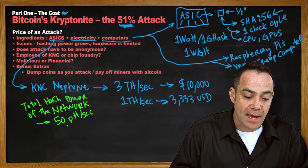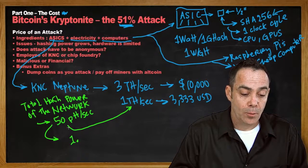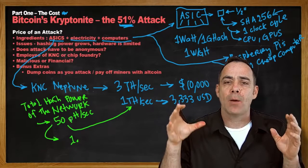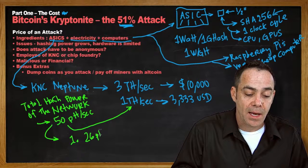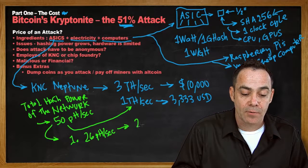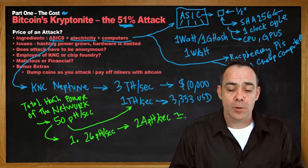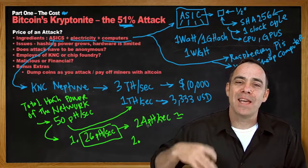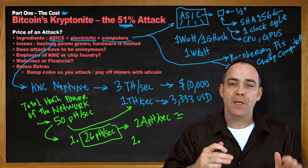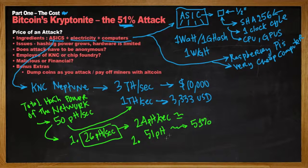We know that one petahash is a thousand times bigger than one terahash. If we wanted to run a 51% attack, there are two ways to do it. The first way would be to wrestle over half the hashing power from people already hashing — you would need to grab around 26 petahashes from current miners, leaving the rest of the network with 24. The other way is to add hashing power to the network. If we add 51 petahashes to the network right now, the total would suddenly be 101 petahashes and we would own 51.